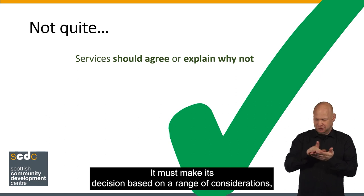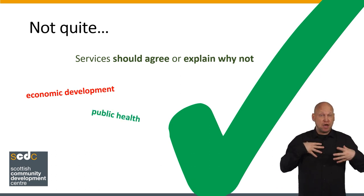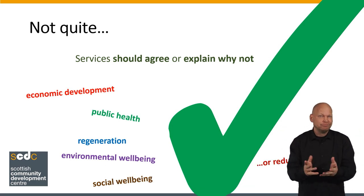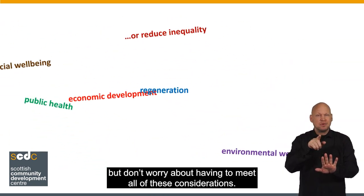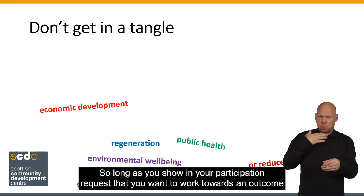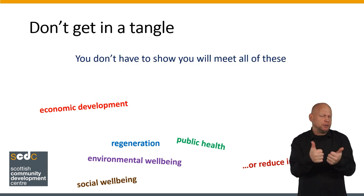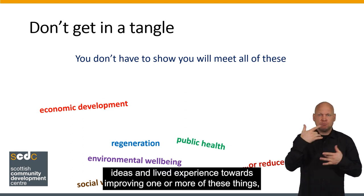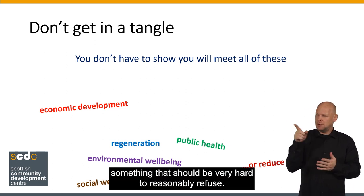It must make its decision based on a range of considerations, such as whether it increases public health or environmental well-being, and whether it reduces inequality. That might look quite daunting, but don't worry about having to meet all of these considerations. So long as you show in your participation request that you want to work towards an outcome that fits with these, you should be okay. All you are asking, in effect, is that you want to contribute your group's ideas and lived experience towards improving one or more of these things — something that should be very hard to reasonably refuse.